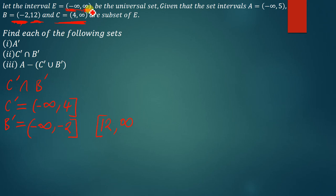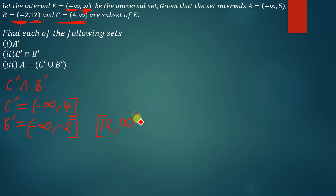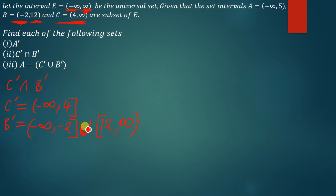When combining two sets, you use union. So B complement is the union of two intervals: negative infinity to negative 2 (closed at negative 2), union 12 to positive infinity (closed at 12). The infinite endpoints always get open brackets.